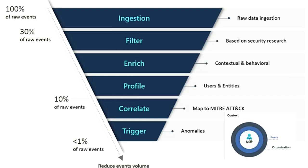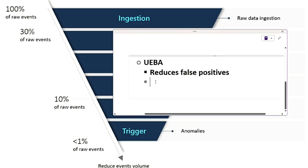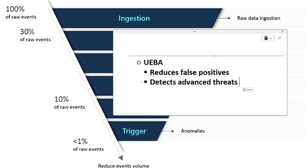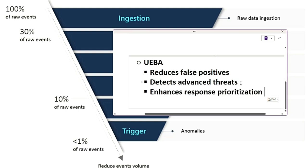As shown in this picture, there is the context user, then peer, then organization - all of this is compared, so it reduces false positives. It also detects advanced threats by identifying insider threats, compromised accounts, and lateral movement by attackers. It enhances response prioritization by helping security teams focus on critical threats first, reducing alert fatigue. Overall, UEBA goes beyond rule-based detection by learning behaviors, detecting anomalies, and correlating security events.